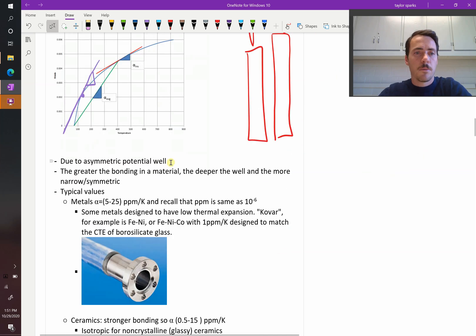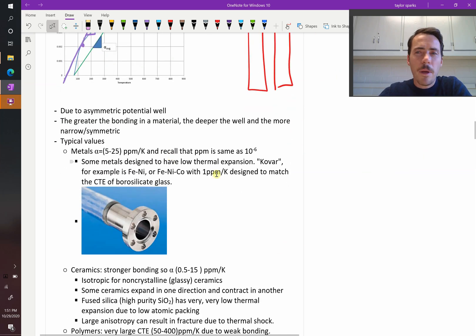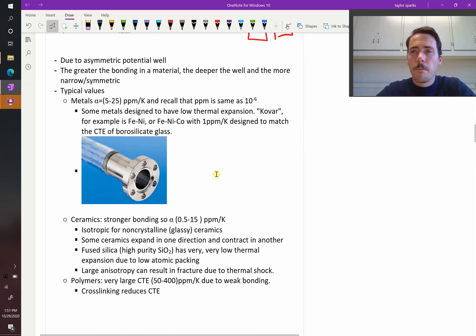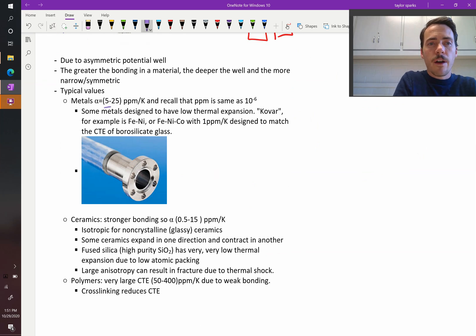We've already talked about the asymmetric potential energy well. How about some typical values? Well, for metals, thermal expansion is probably going to be something like 5 to 25 parts per million per K. So for every 1 degree Kelvin, it's going to increase by 5 to 25 parts per million range. Remember that parts per million is just the same as saying that it's times 10 to the negative 6. Now, there are some metals that can be designed to have low thermal expansion.